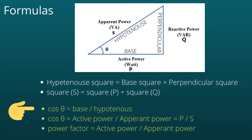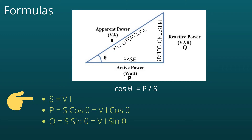From the right-angle triangle, cos θ equals base upon hypotenuse. So cos θ equals active power upon apparent power, and cos θ is the power factor. Therefore, power factor equals P upon S. Since apparent power S equals voltage times current (VI), and cos θ equals P upon S, we get P = S·cos θ, so active power P = VI·cos θ.